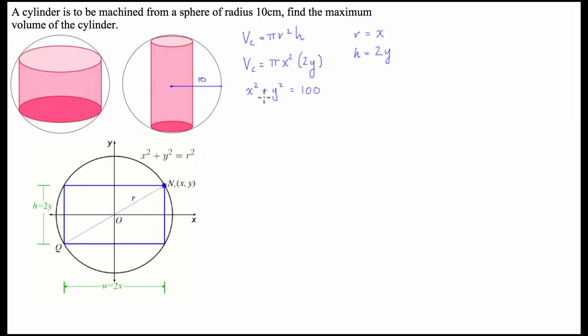So, now we have these two formulas, we're going to be able to get one formula, volume, in terms of one variable, so then we can optimize it. So I've found the easiest way to do this is we're going to rearrange the function for a circle. So, we're going to say x squared is equal to 100 minus y squared.